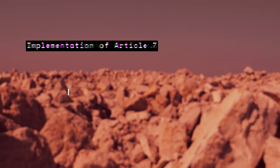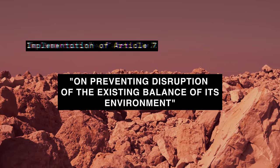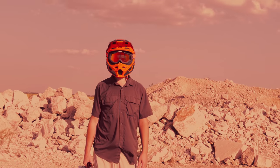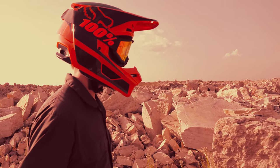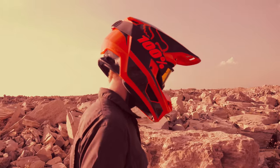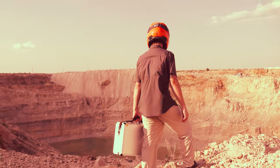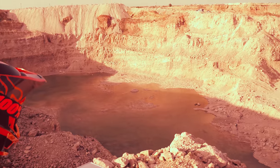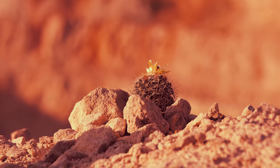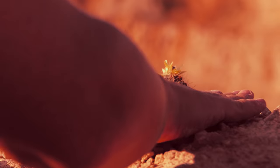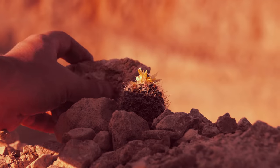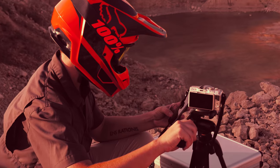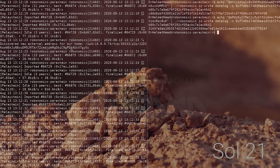Implementation of Article 7 on preventing disruption of the existing balance of its environment. To fulfill the article on maintaining balance in the environment, the ecologist saves landscape images of the habitat of the Mars 1 base camp with a demonstration of crops for growing and their impact on the environment. The implementation is almost identical to the previous paragraph with the exception of the connected equipment, the type and size of data transmitted to Earth.